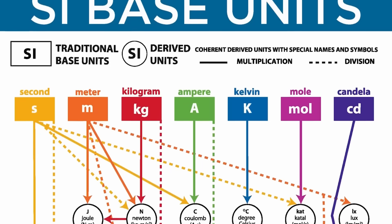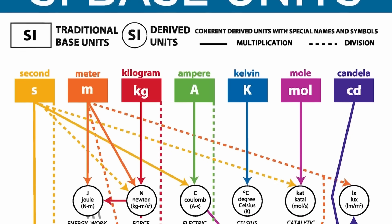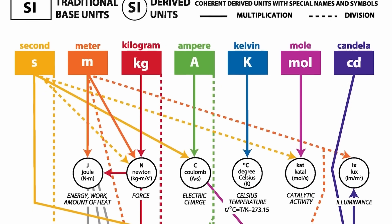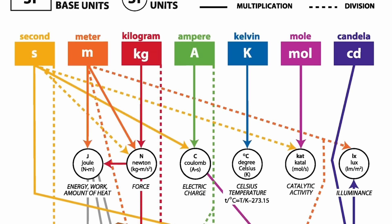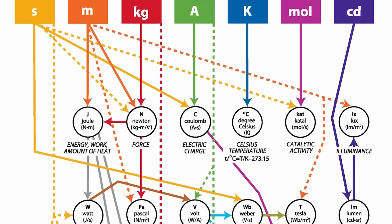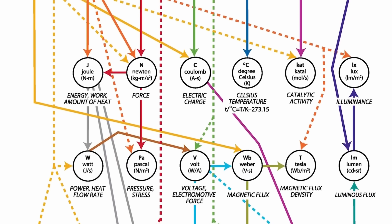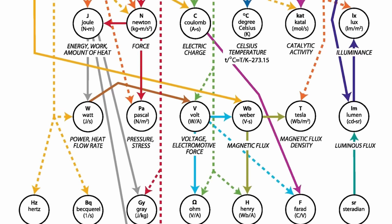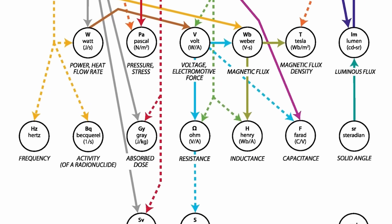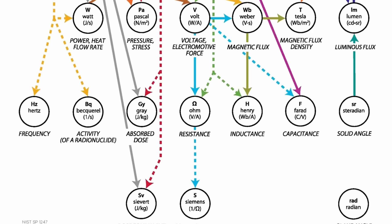I think it's one of the most underrated questions in the foundations of physics. In the international system of units, there are seven base units: second, meter, kilogram, ampere, kelvin, mole, and candela. Any other units are products of those — such as meters per second squared, which makes a unit of acceleration, or kilogram times meters over second squared, which is a unit of energy.